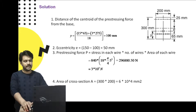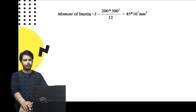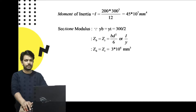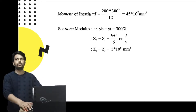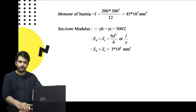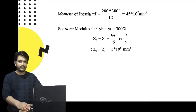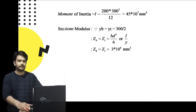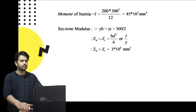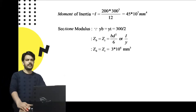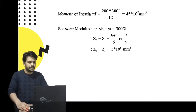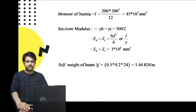The area of cross-section is b×d. Moment of inertia for a rectangular section is bd³/12. Since the cross-section is rectangular, the neutral axis is equidistant from top and bottom, so yt = yb and therefore Zt = Zb = bd²/6 = I/y. Both Zt and Zb equal 3 × 10⁶ mm³.